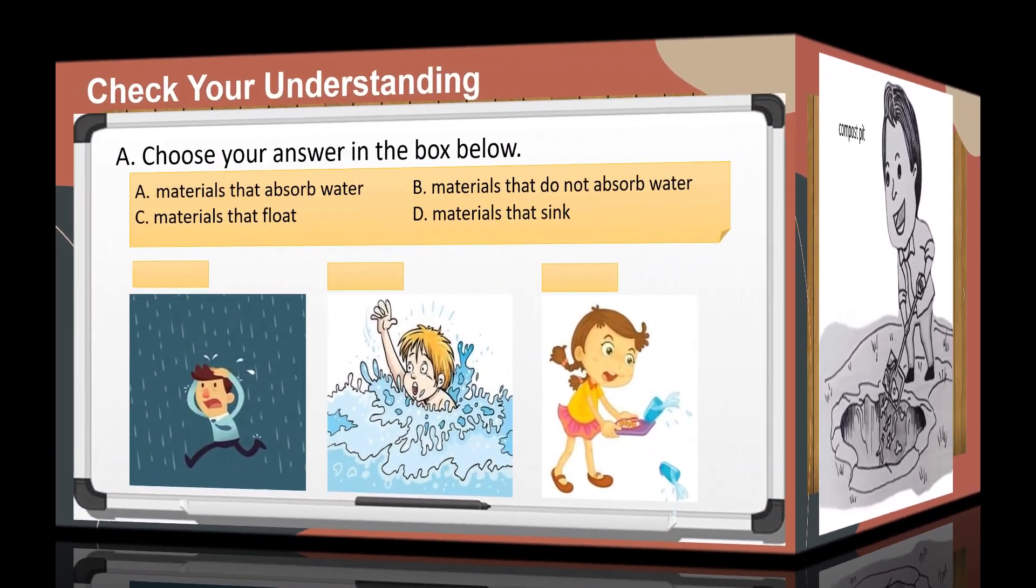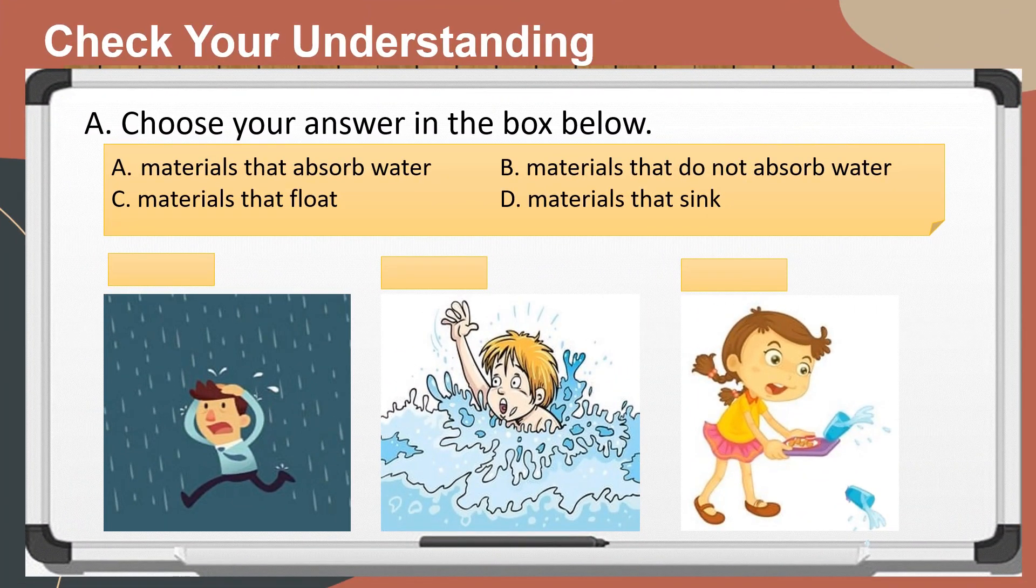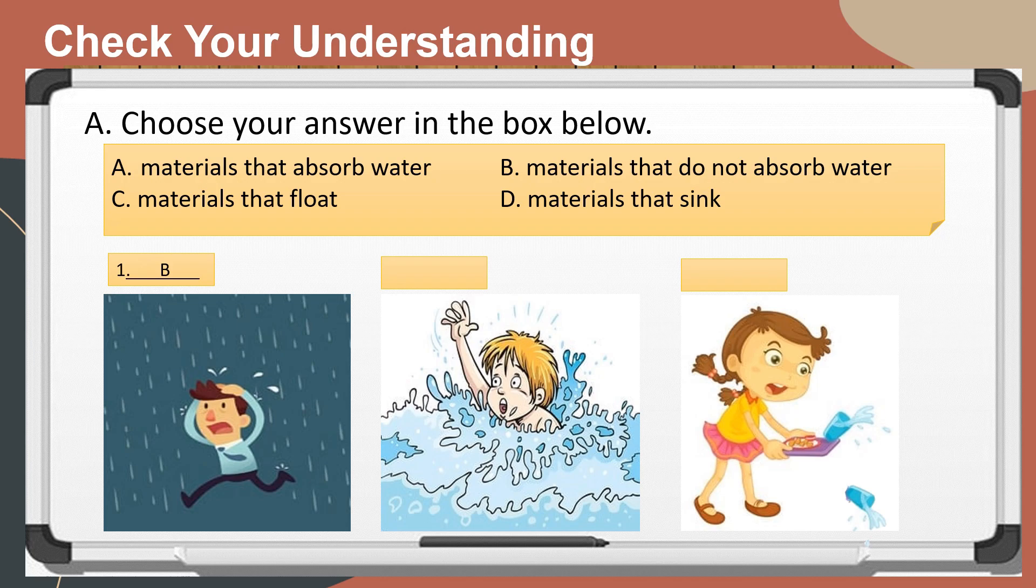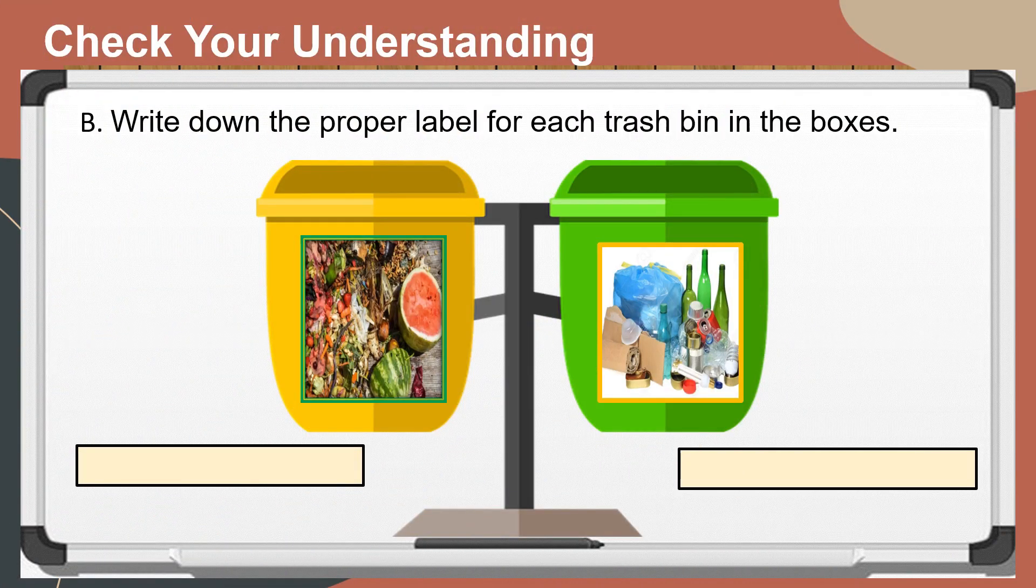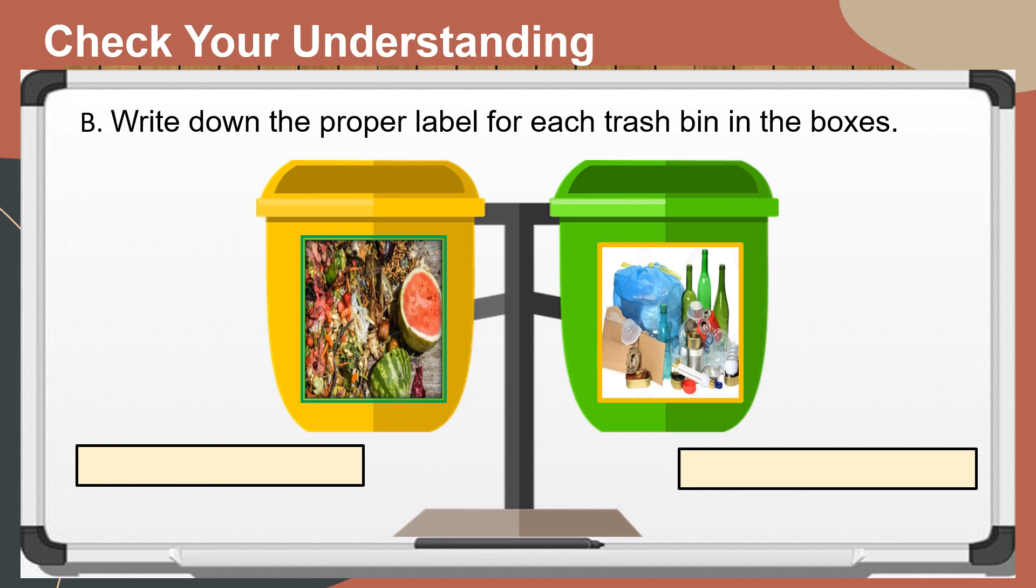Okay, let us now check your understanding. For letter A, look at the pictures. What materials do you need in the given situations? Choose your answer in the box. Write the letter of your answer. For letter B, write down the proper label for each trash bin in the boxes.